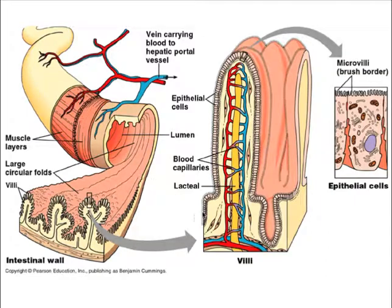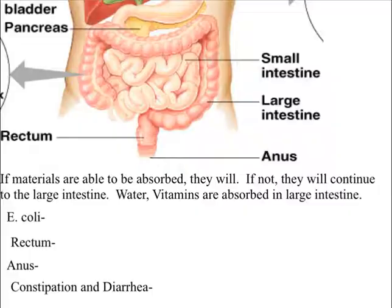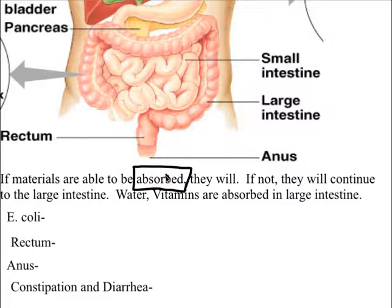Here's another picture of the villi and microvilli — part of the small intestine with those finger-like projections to help with absorption, and the microvilli off each one. In a cross-section, you can see capillaries surrounding the microvilli so nutrients can absorb and get into the circulatory system. The key function here is that the digestive system absorbs nutrients that the body can use.